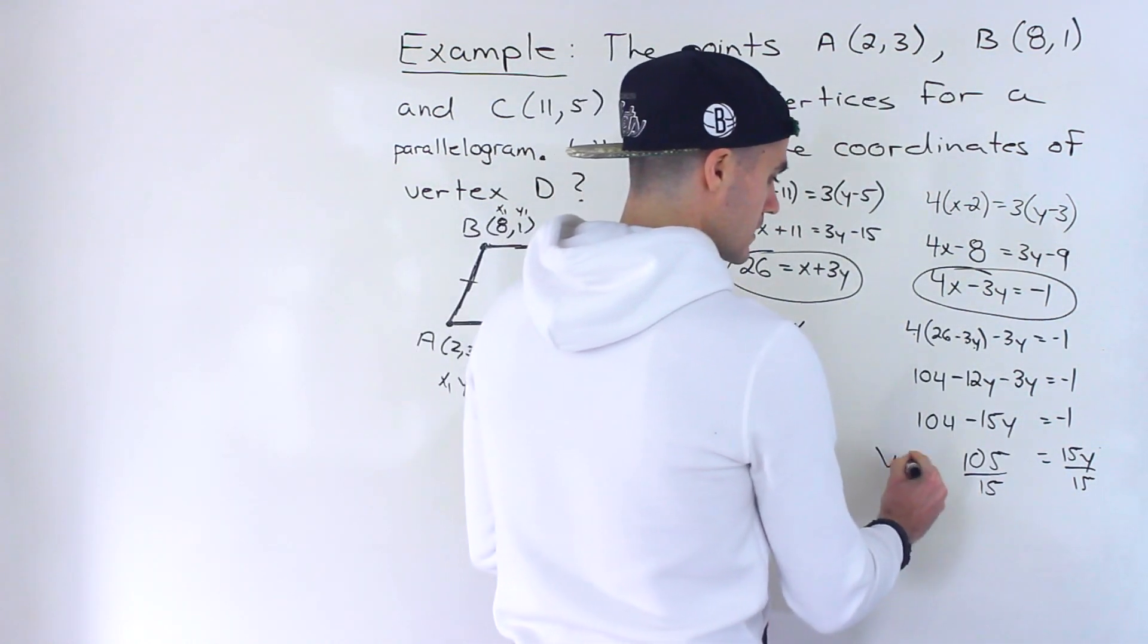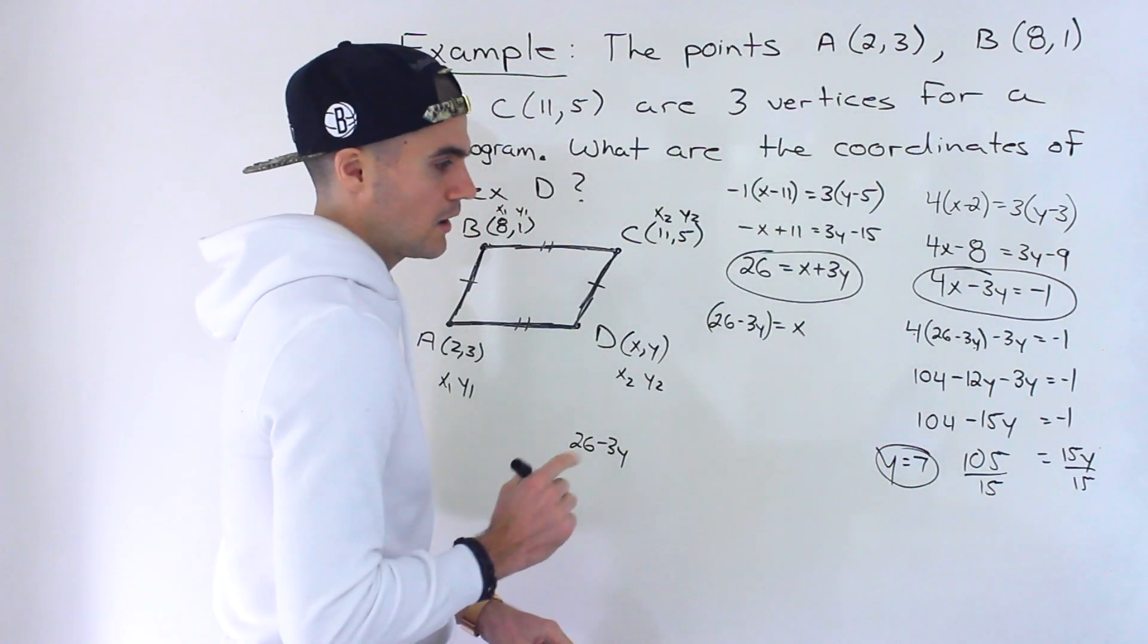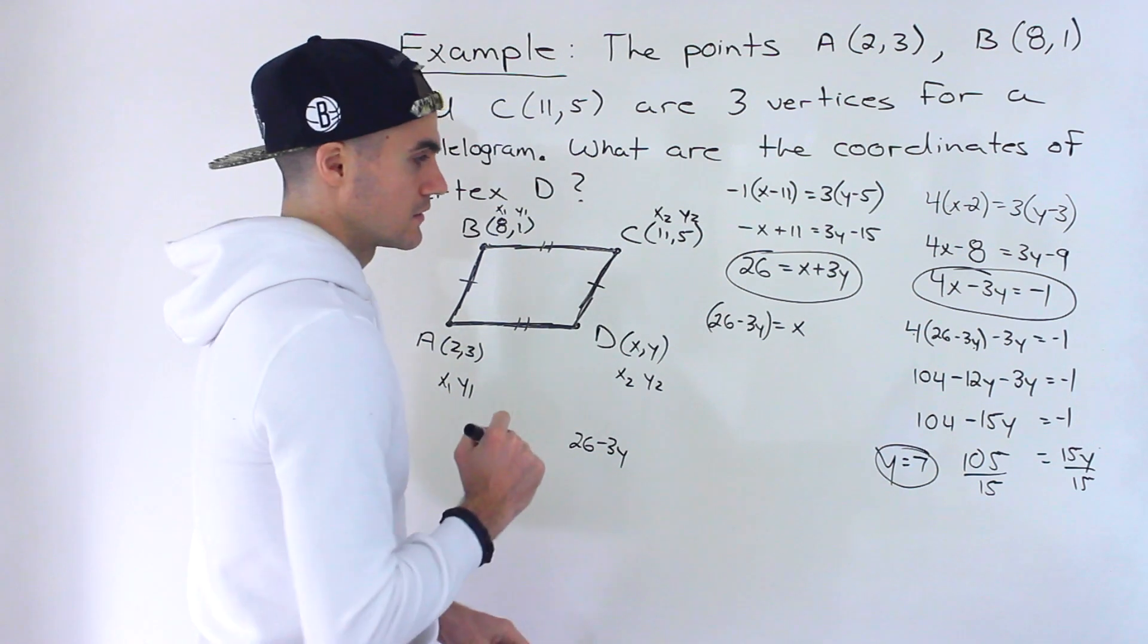And then we've got the negative 1. I'm going to bring the negative 1 over and then I'll bring the negative 15Y over. So negative 1 comes over, 104 plus 1 gives us 105. This ends up being 15Y, positive 15Y. Divide both sides by 15. We end up with Y equaling 7. Right? 105 divided by 15 gives us 7.